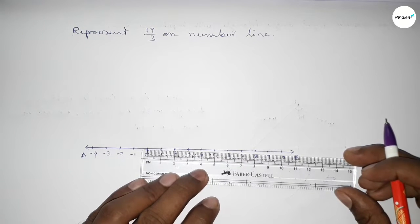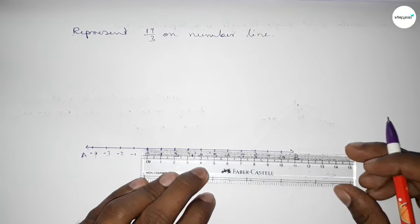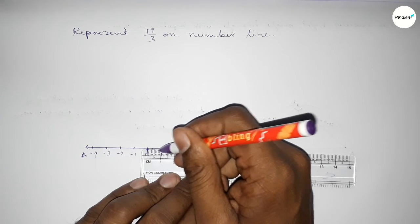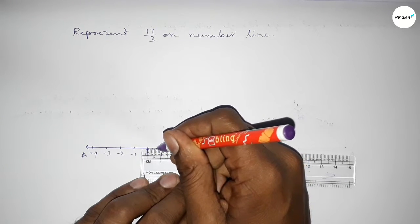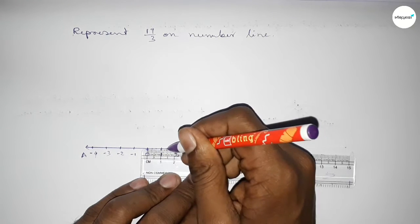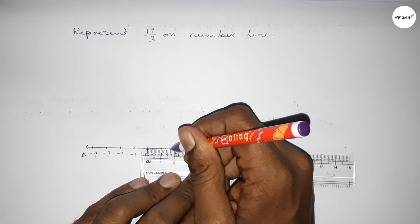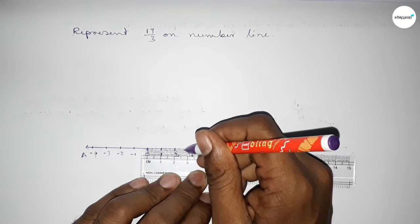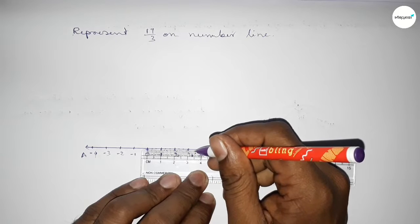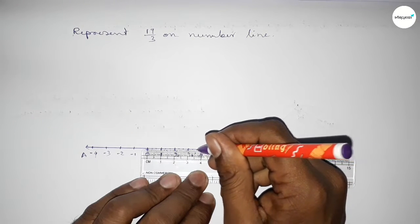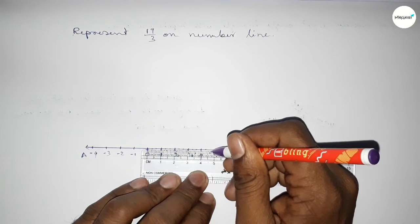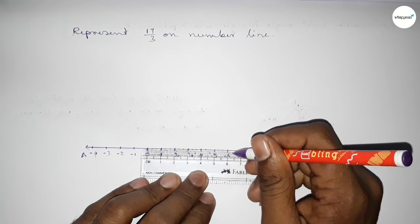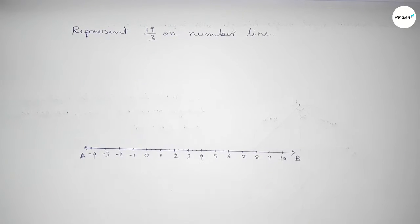Now we have to divide the distance between any two numbers into three parts approximately. Dividing the distance between zero to one: this is approximately 0.3 something, and this is 0.6 something. Similarly dividing between one to two, two to three, and three to four in the same way — each time the two division points are approximately 0.3 and 0.6 into the interval.